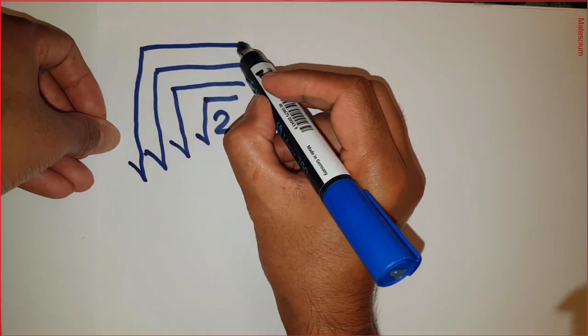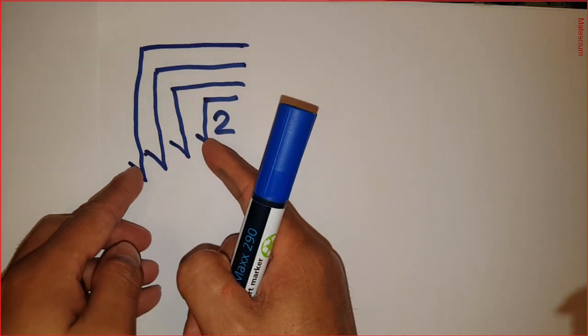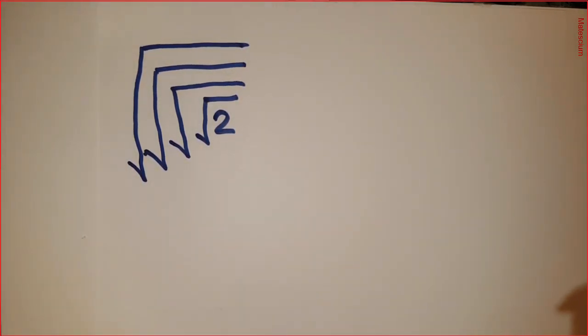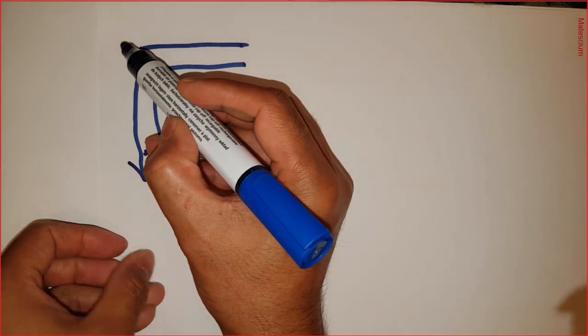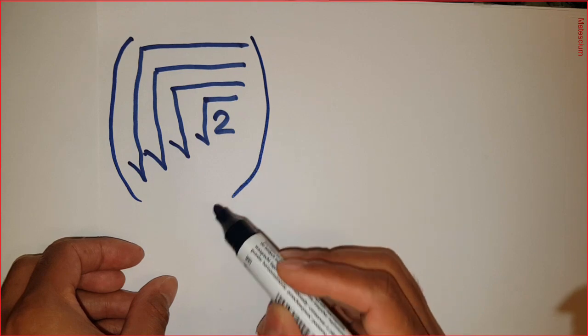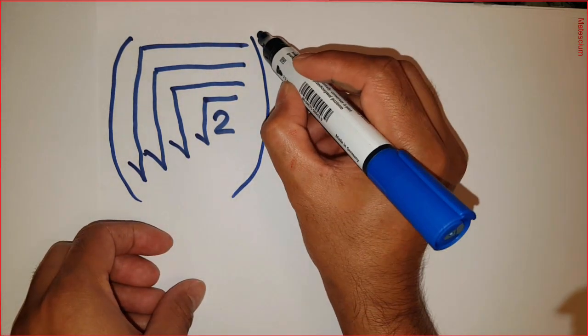This is covered by again another square root. So it has total 4 square roots. Now it gets a little bit complex, right? Well, it's not the end. You have something more to see. And this whole part has a power of 32.